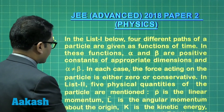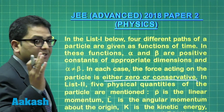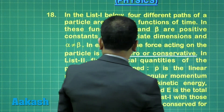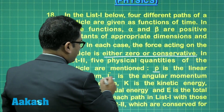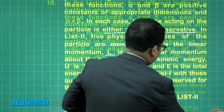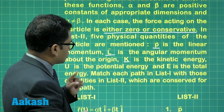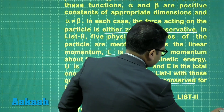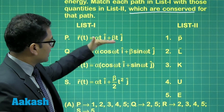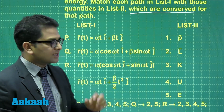We'll see what is there in list one. The force acting on the particle is either zero or conservative, which is a clear indication that mechanical energy would be conserved. In list two, five physical quantities of the particle are mentioned: P is linear momentum, L is angular momentum, K is kinetic energy, U is potential energy, and E is total mechanical energy. List one has to be matched with list two to find which of P, L, K, U, and E are conserved.